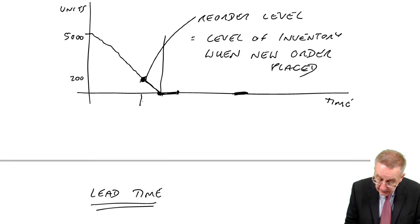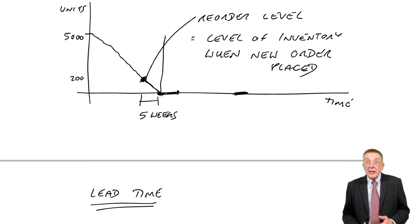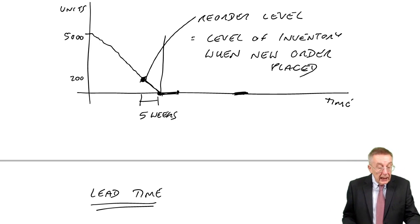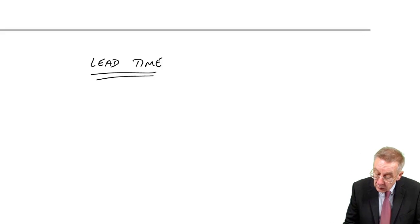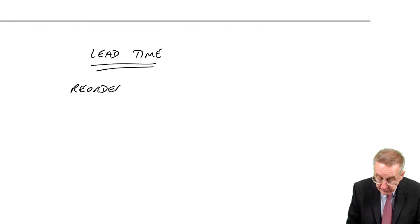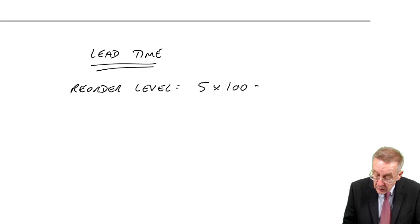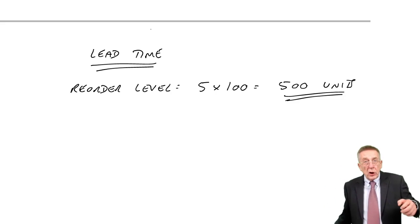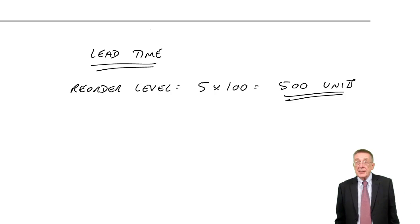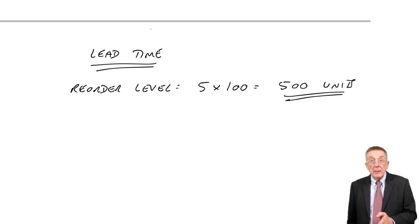As I just explained, how many units do we need to still have in inventory when we place the order to avoid running out? Well, surely, if it takes five weeks to get the goods, we need to have enough left when we place the order to be able to supply customers for five weeks. And if the demand is 100 units a week, we need a reorder level of five weeks times 100 a week, so we need to reorder when 500 units left.